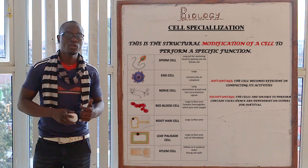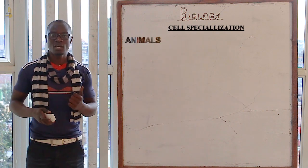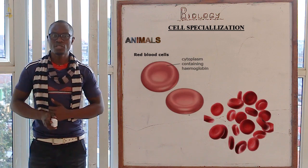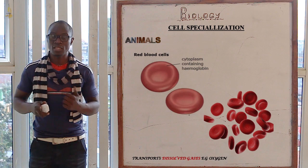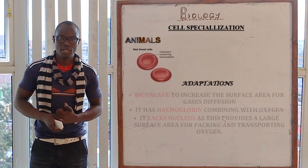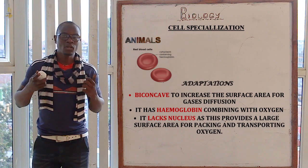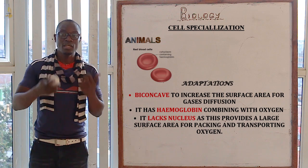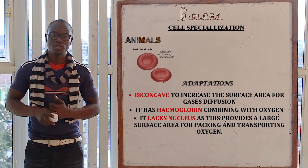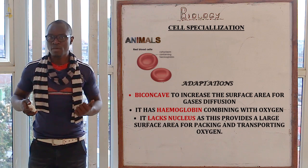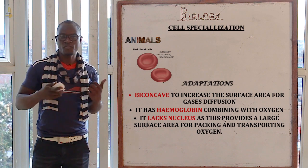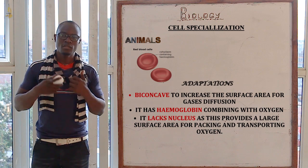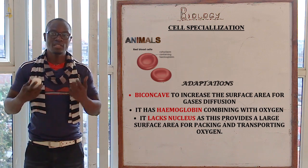The cells specialized are different in animals and in plants. Beginning with animals, the first specialized cell is the red blood cell, which transports oxygen. The first adaptation is that it is biconcave to increase the surface area for gas transportation. The second adaptation is that it contains haemoglobin, which has a very high affinity for oxygen, so oxygen reacts with haemoglobin for easier transportation to the areas where it is required.